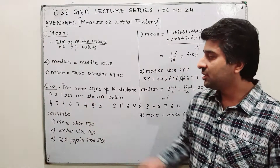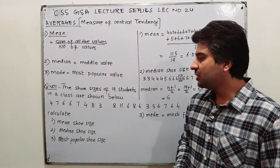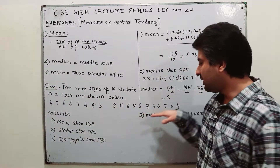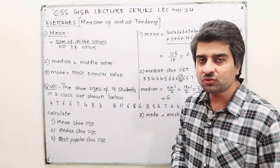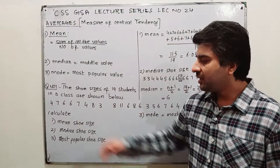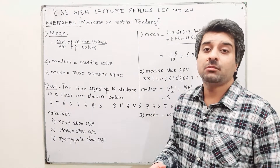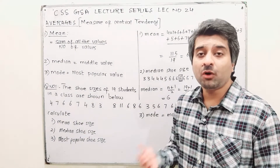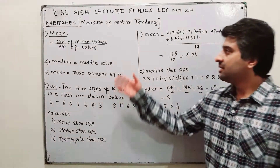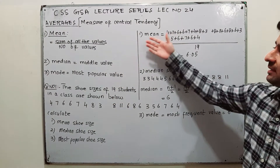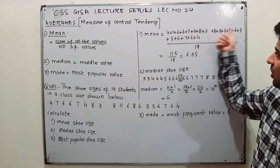Let us take a question: the shoe sizes of 19 students in a class are shown below. Calculate the mean shoe size, median shoe size, and most popular shoe size. As you know, mean is the sum of all the values, so add all the shoe sizes divided by the number of values.